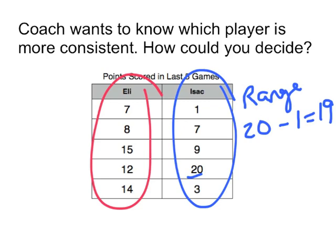Eli, on the other hand, his best game was 15, minus his worst game, 7. And so he has a range of 8.